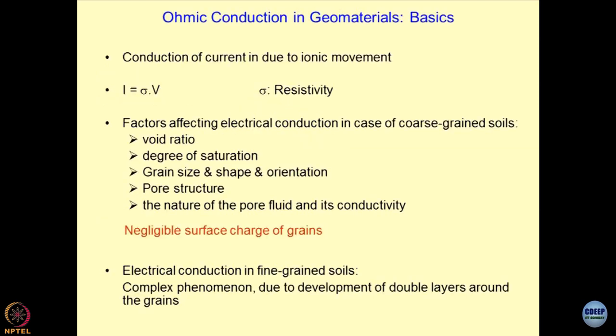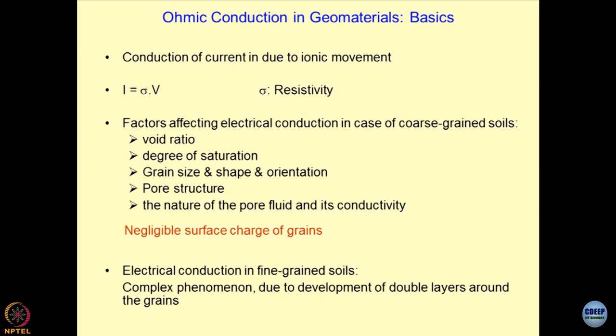Before going into that, a bit on the ohmic conduction of geomaterials. The flow of current follows Ohm's law, which is because of ionic movement. We define current equal to resistivity times V. We write V = I · R, where R is 1 upon sigma. This becomes the resistance R.